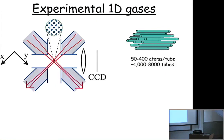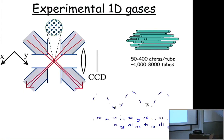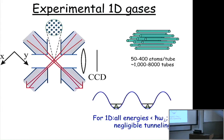I'll be talking about the quantum Newton's cradle experiment. We have a 2D optical lattice which gives us a bundle of tubes. Those are very large lattice beams, so all the tubes are essentially identical. We cap the tubes with a red-detuned cross-dipole trap, which provides a somewhat anharmonic confining potential in the axial direction. It's one-dimensional because all the energies are less than the vibrational spacing, and because there's negligible tunneling between tubes — the lattices are deep enough that there's just no significant tunneling, so we have a bunch of independent one-dimensional tubes.